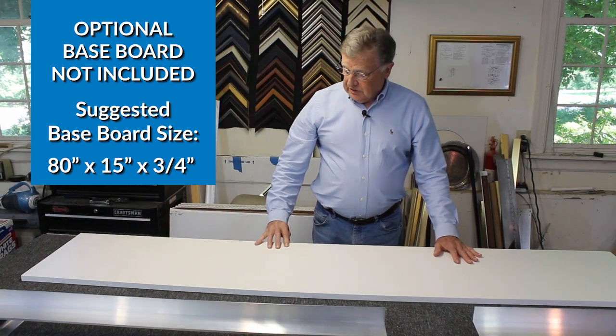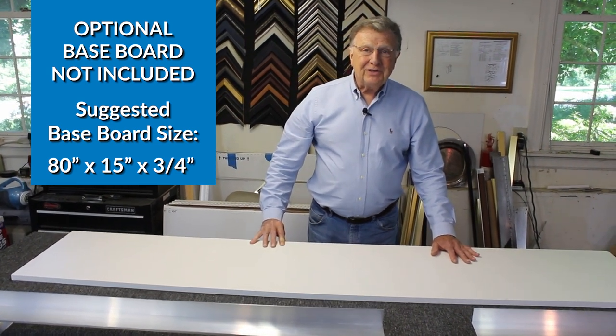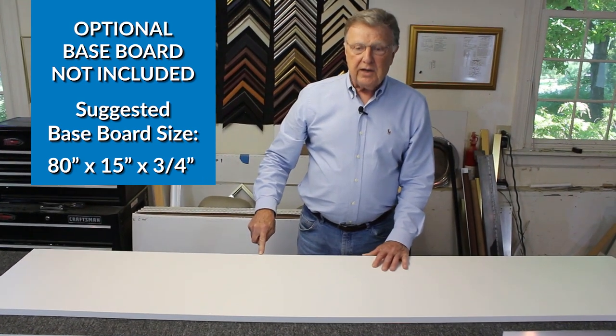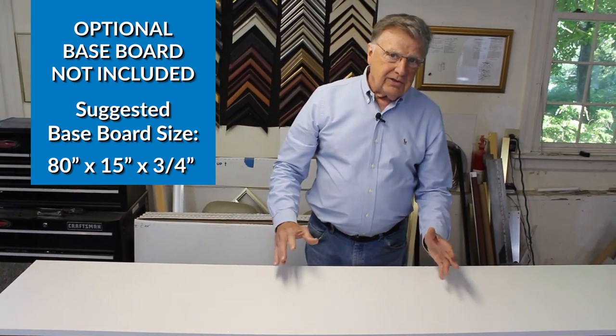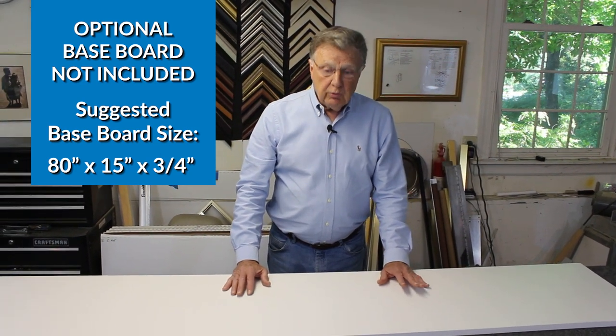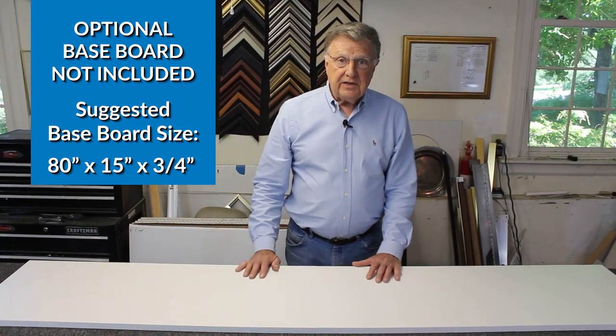This board is 80 inches long. It's three quarters of an inch thick and it's at least 15 inches across this way. This can vary according to the size of the foot of the table saw or the miter saw that you're using. The one we're using requires at least 15 inches.